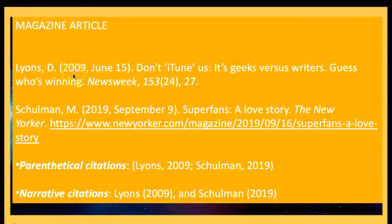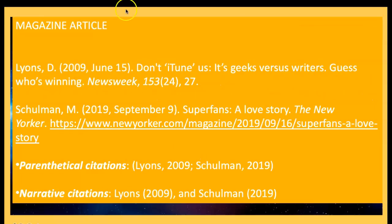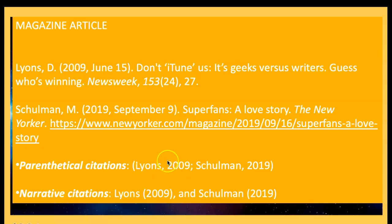For a magazine article, the difference is that in a journal article you only write the year of publication, whereas in a magazine article you also give the exact date when it was published. Magazines are published weekly, quarterly, half-yearly, or yearly, so it's important to give the exact date. However, for in-text citation you only give the year of publication, not the exact date.